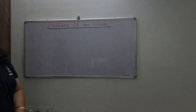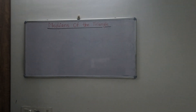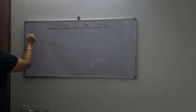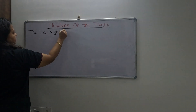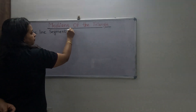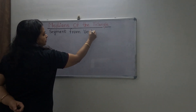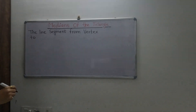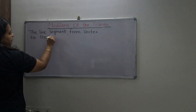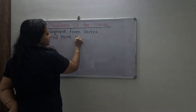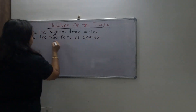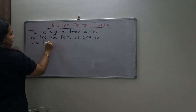Today we will learn medians of the triangle. A median is the line segment from a vertex to the midpoint of the opposite side. It's called a median.